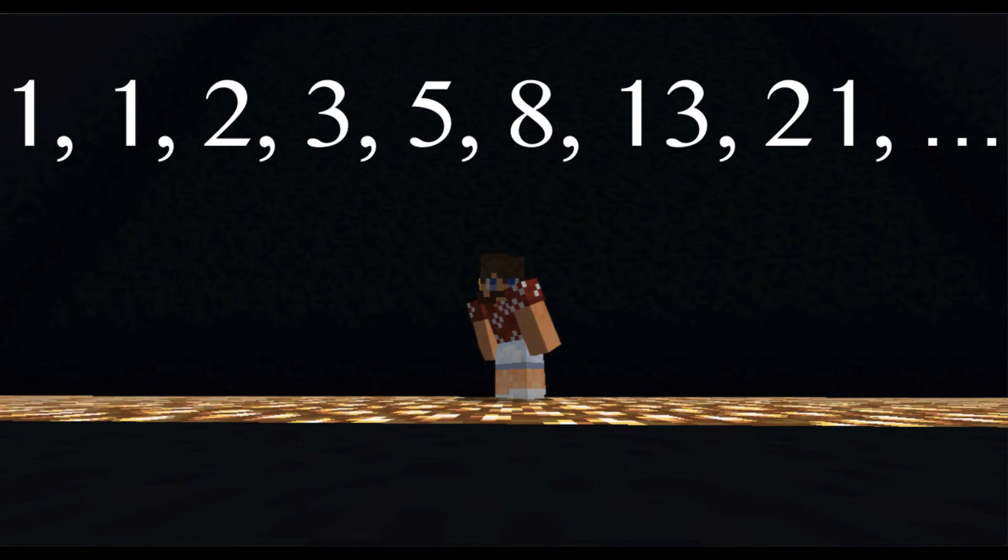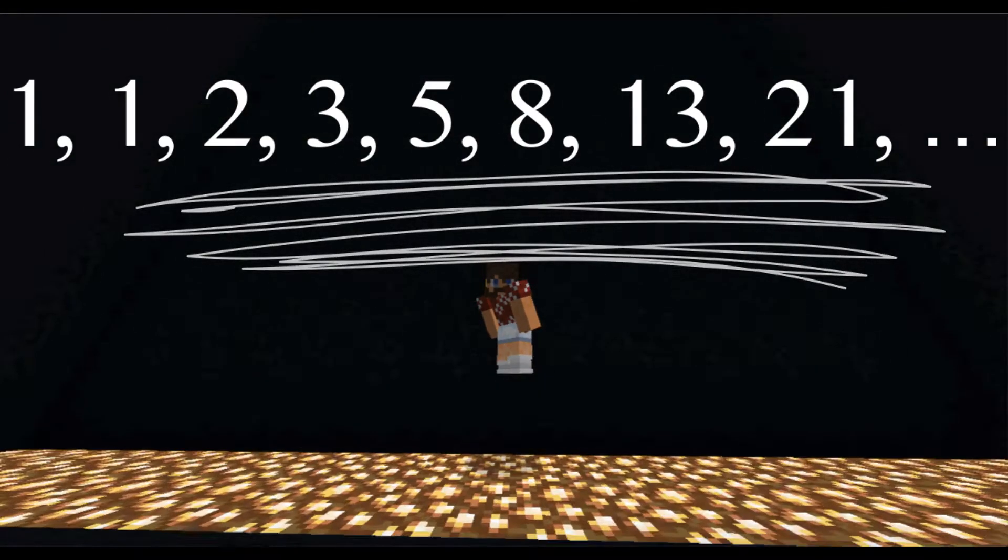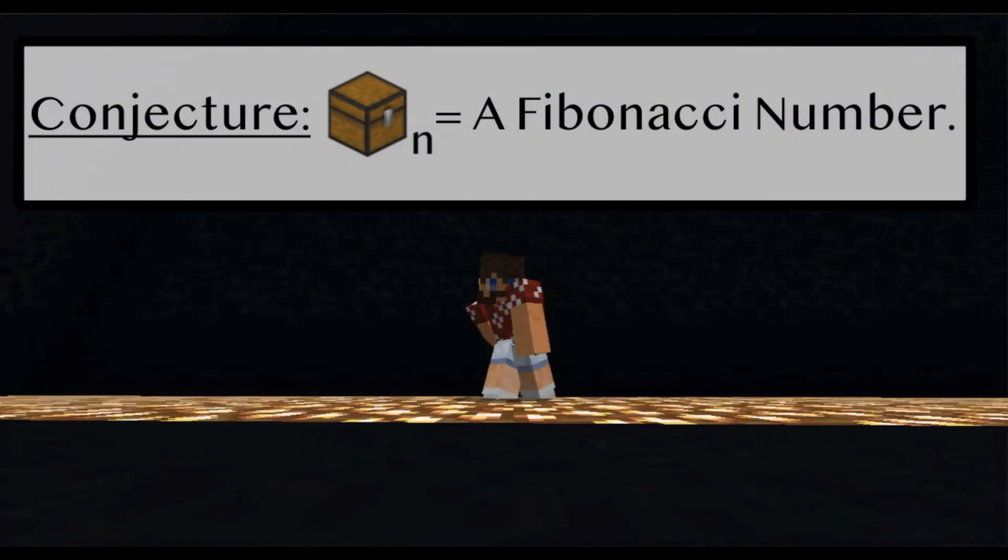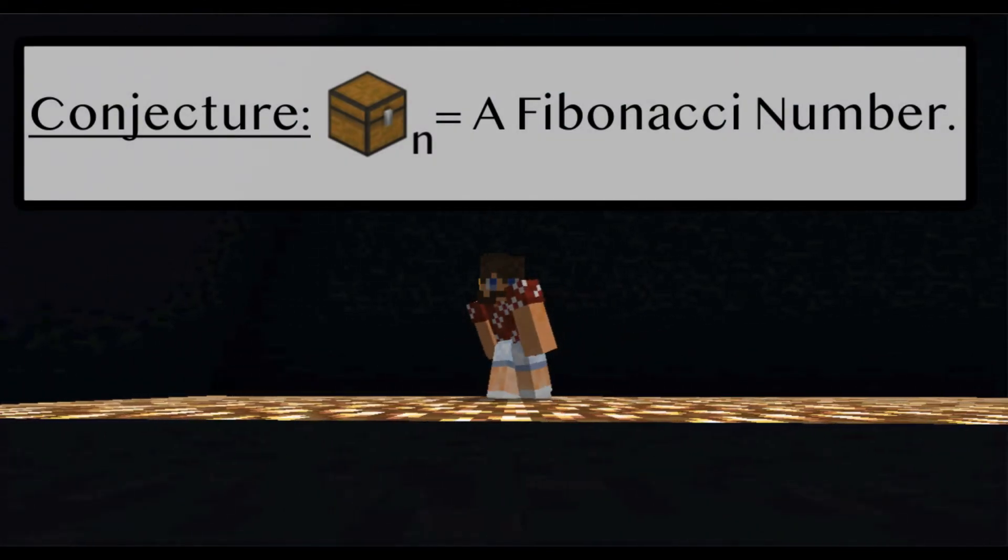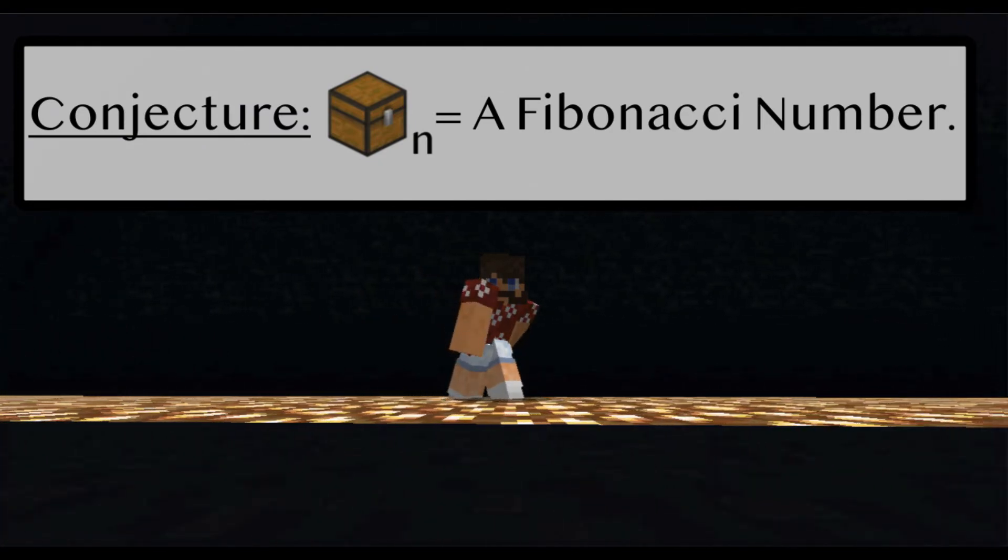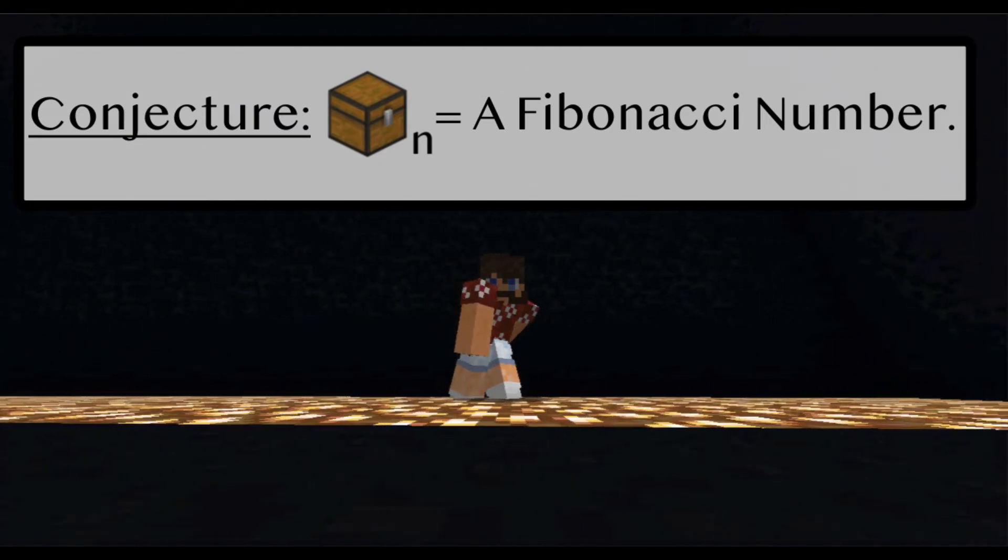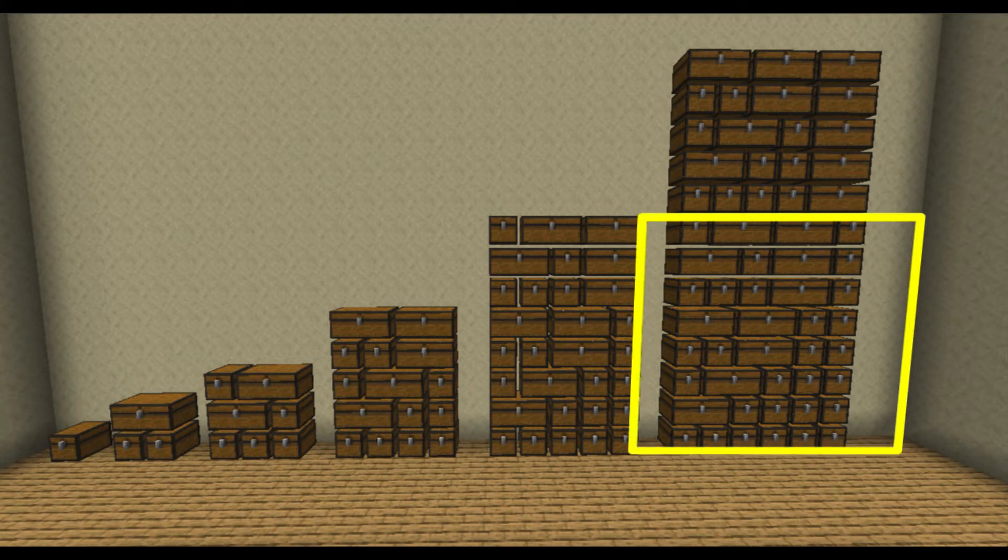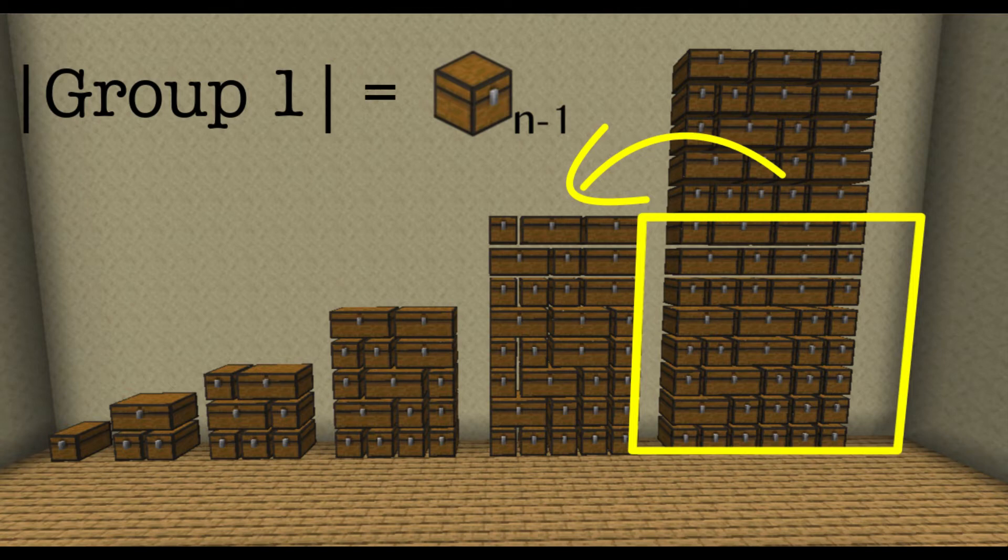Does this look familiar? It should. Let's now show that the number of ways to fill a row of n blocks with single and double chests is a Fibonacci number. Note that the rows of chests can be partitioned into two groups. Group one contains rows ending in a single chest. There are chest sub n minus one of these.